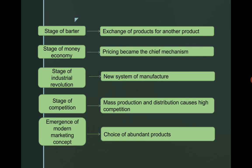To recap: the first stage is barter, with no competition or mass production thinking. Next is money economy, where the technique of transferring money emerges. Then the new system of manufacture with the industrial revolution. Next is the stage of competition, where huge competition arises because of the large number of products produced in the economy. And finally, the modern marketing concept emerges as a need. This is the evolution of the marketing concept.